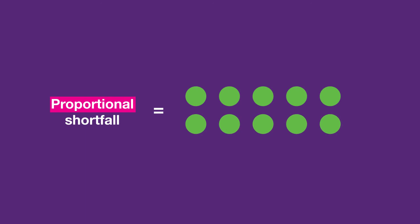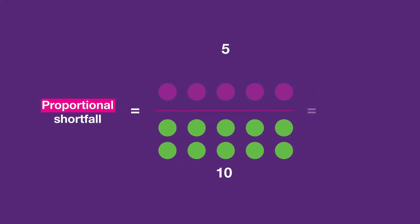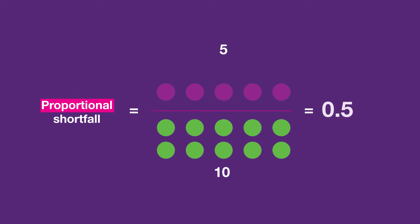A person is expected to have 10 QALYs, but gets a disease which means they will only have 5 QALYs. The proportional shortfall is the number of QALYs they have lost because of the disease, divided by the number of QALYs they were expected to have without the disease. In this case, that gives us a proportional shortfall score of 0.5. If the disease means the patient will lose more QALYs, the proportional shortfall score gets higher and closer to 1. The more life-threatening the disease, the higher the proportional shortfall score will be.